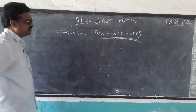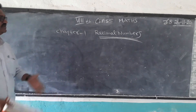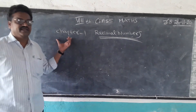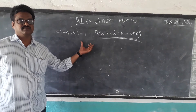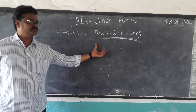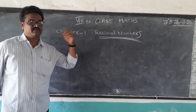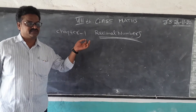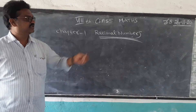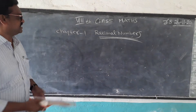Rational Numbers means a number which can be written in the form P by Q, where P and Q belong to Z, and Q is not equal to 0. This is called a Rational Number.